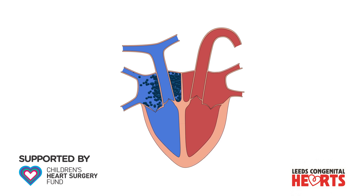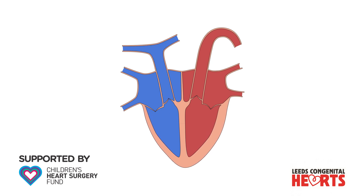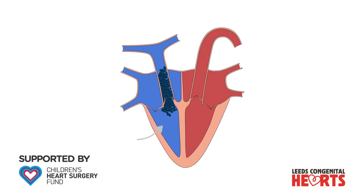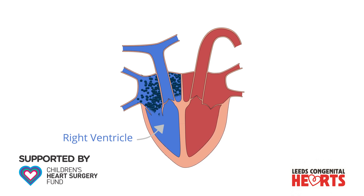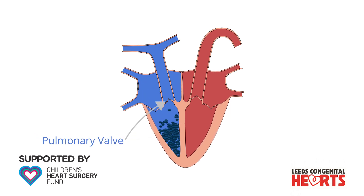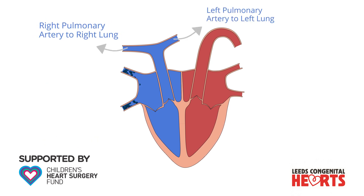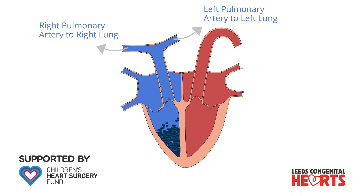In Tetralogy of Fallot, the heart develops with two main abnormalities. The first of these is an obstruction to blood being pumped from the heart to the lungs. The part of the heart that pumps blood to the lungs is called the right ventricle. Blood passes from the right ventricle through the pulmonary valve to the pulmonary artery, which then divides into right and left pulmonary arteries to take blood to the right and left lungs.